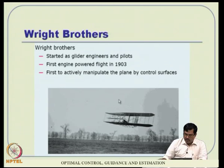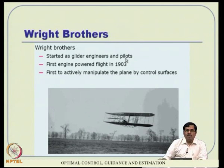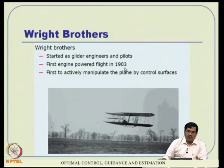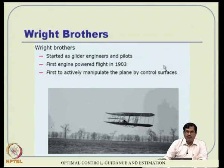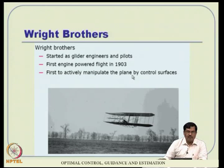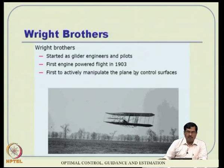The next big credit goes to the Wright brothers. They started as glider engineers and later as pilots. They did a lot of internal testing followed by optimization of the wing structure. The most credit for their successful flight goes to the control surface - they were the first to realize that uncontrolled flights are simply not possible. You need a control system for successful flight. It was also the first engine-powered flight in 1903, just about 105-106 years back, with tremendous improvement in the field since then.